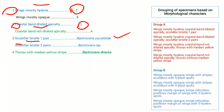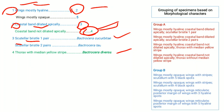Moving towards number four — wings mostly hyaline, coastal band not dilated apically — you pair this character with number four, which is thorax with median yellow stripe. A specimen with wings mostly hyaline, coastal band not dilated apically, and thorax with median yellow stripe is identified as Bactrocera diversa. Thorax without median yellow stripe is identified as Bactrocera dorsalis.